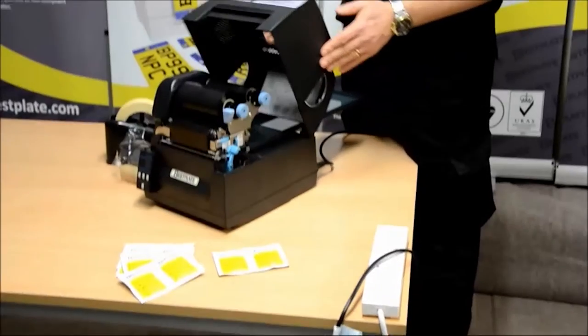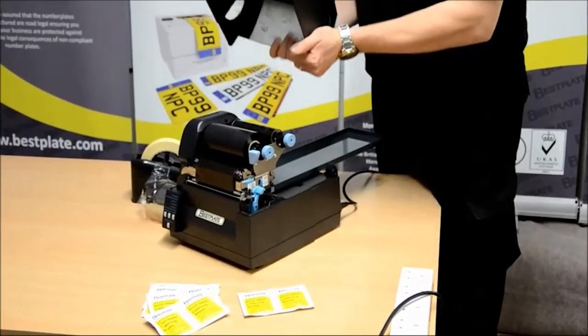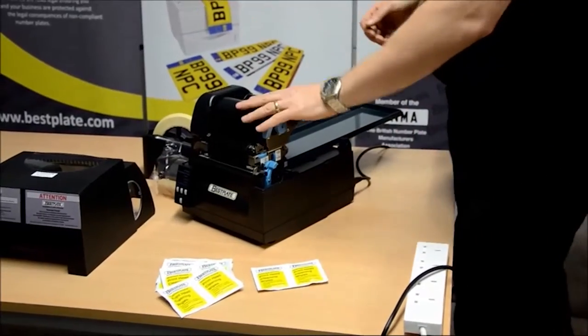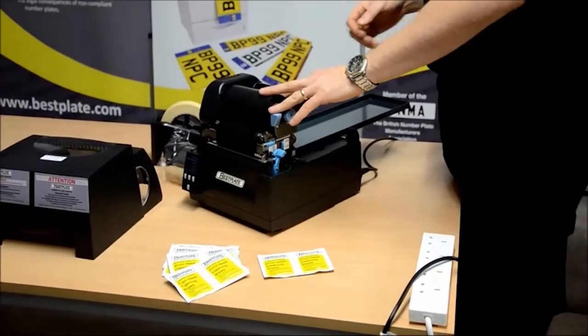Next, lift up the lid and take the lid completely off the printer. As you can see, we've got the old roll on there, we need to remove that.